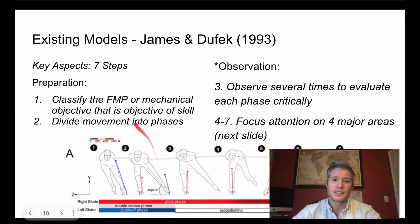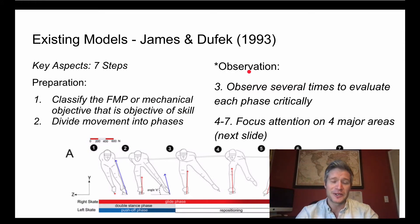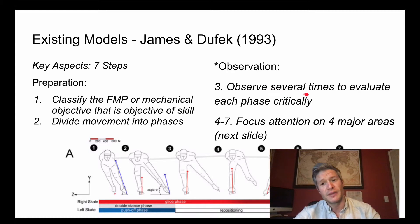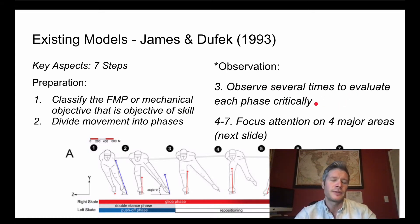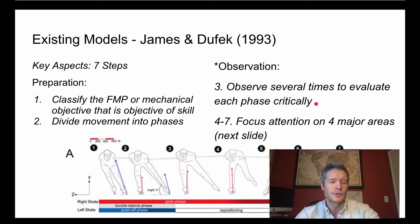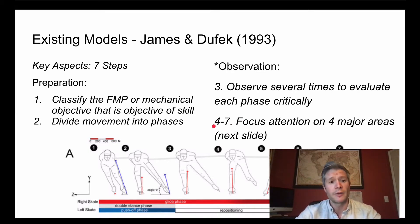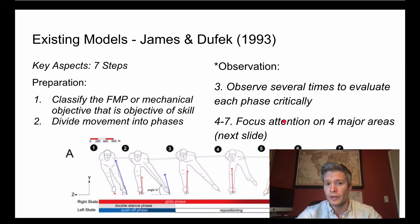We've spoken about preparation phase and observation in previous classes. The James and Dufek model suggests that you observe several times to evaluate each phase critically. How many times do we watch something? We'll come back to that a bit later. The main component in the observation model I want to draw your attention to is four major areas in sequential order for how you should watch a movement.